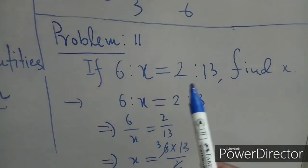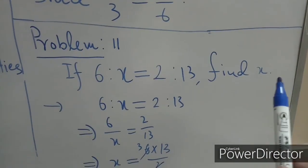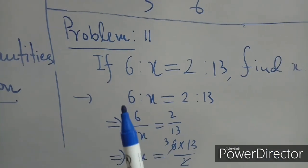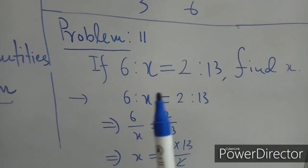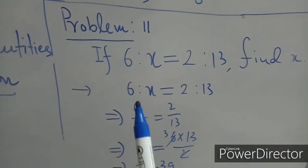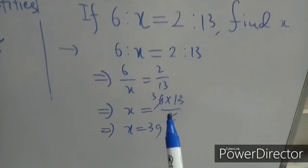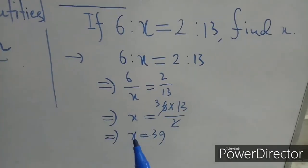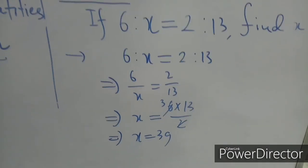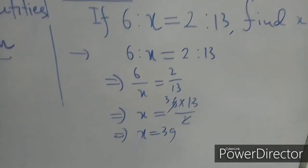Problem number 11: if 6 : x = 2 : 13, find x. From 6/x = 2/13, cross-multiplying gives x = (6 × 13) / 2 = 39.